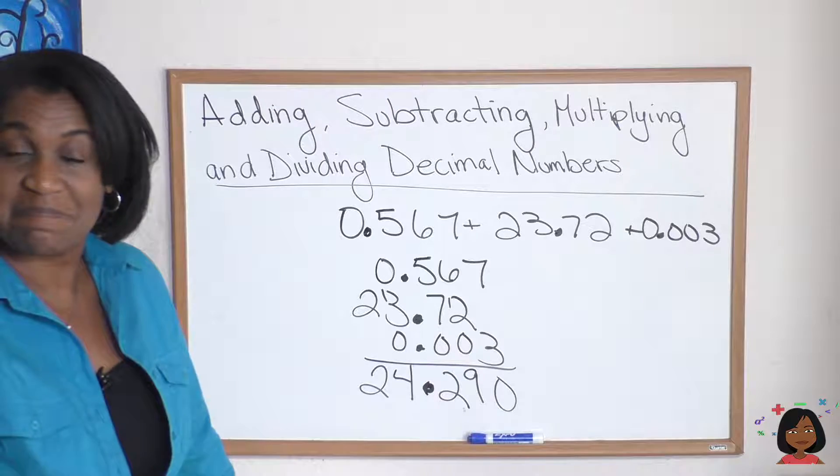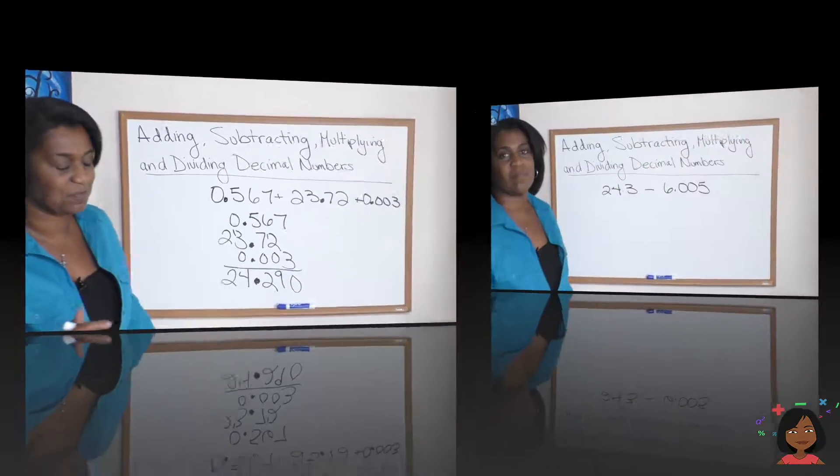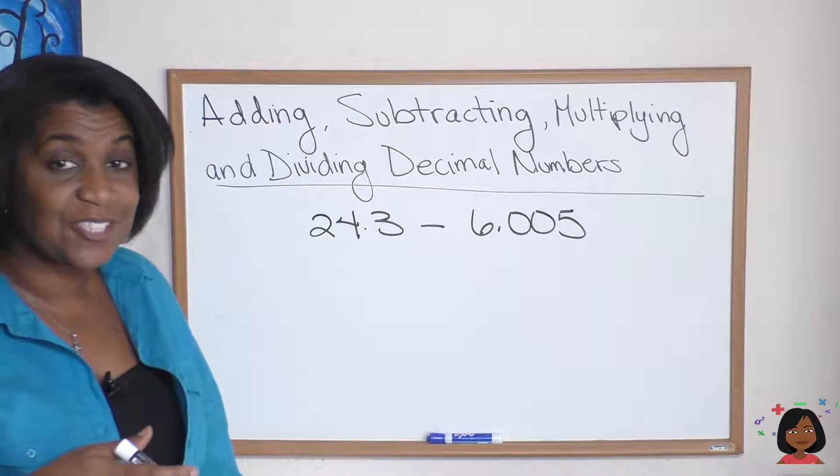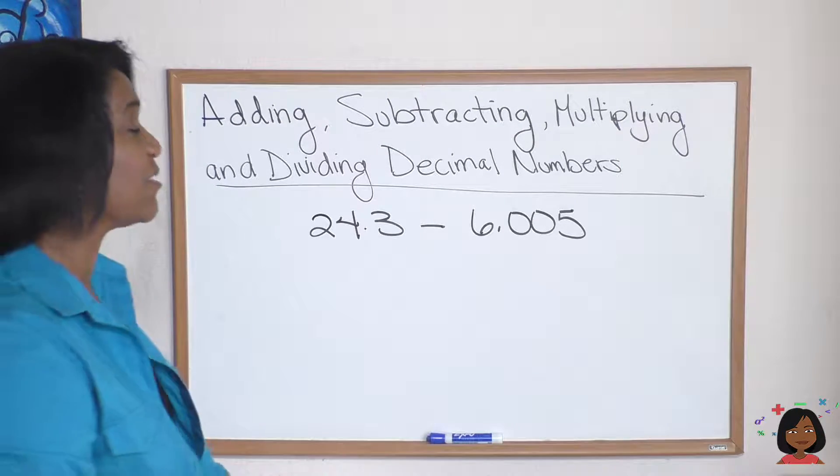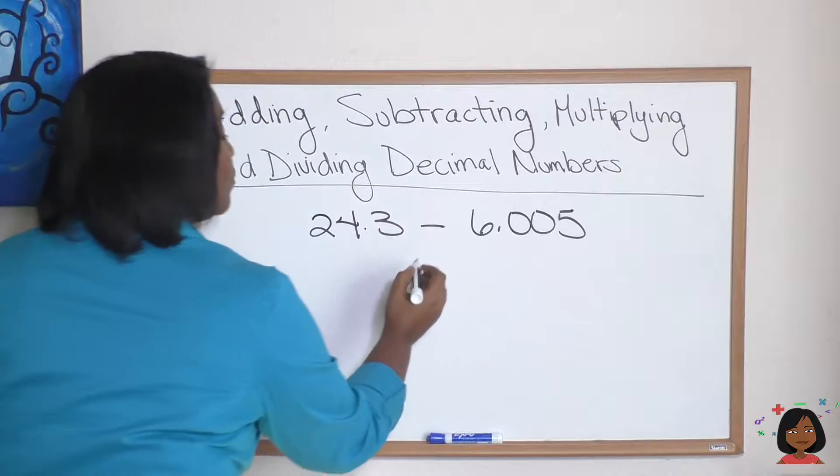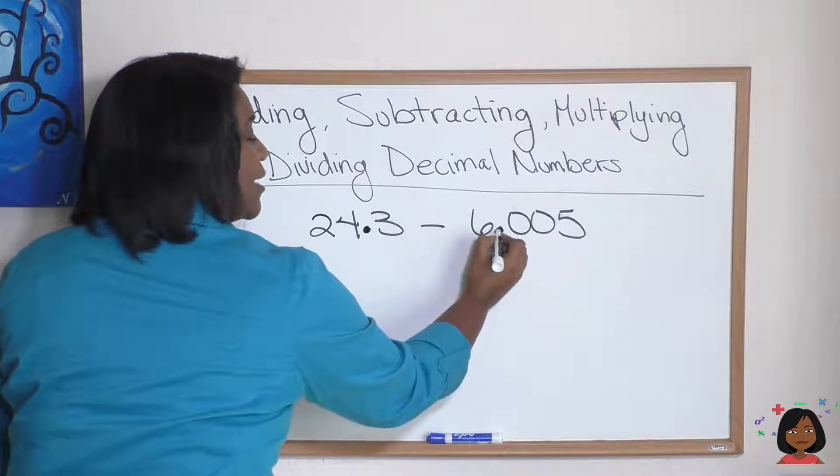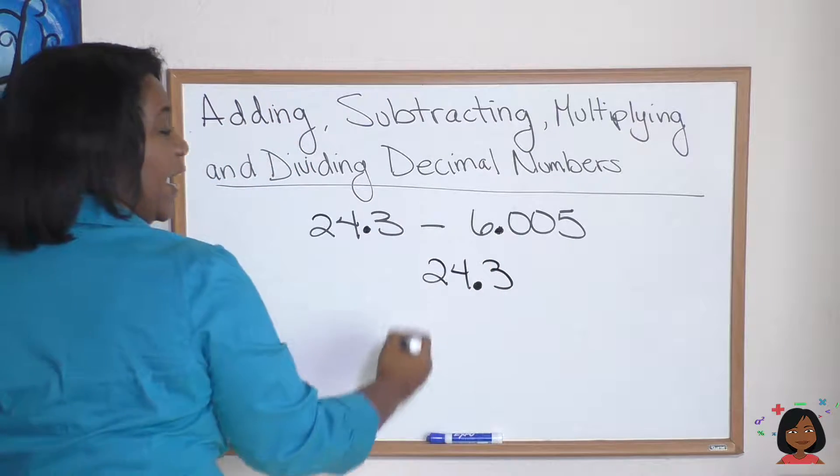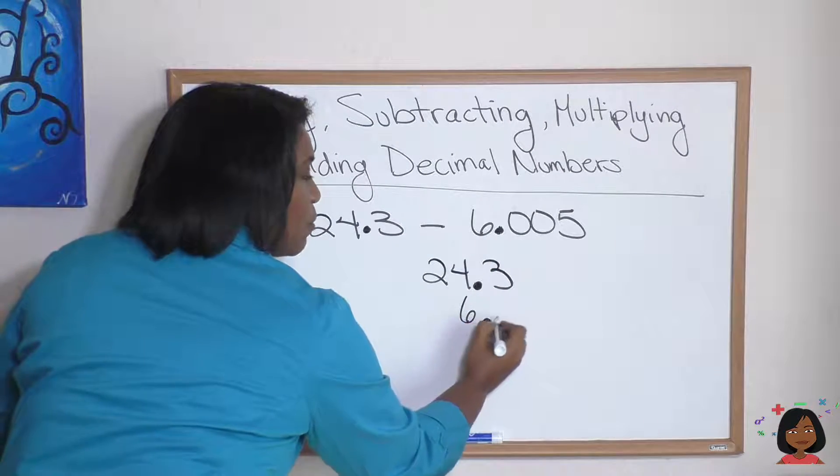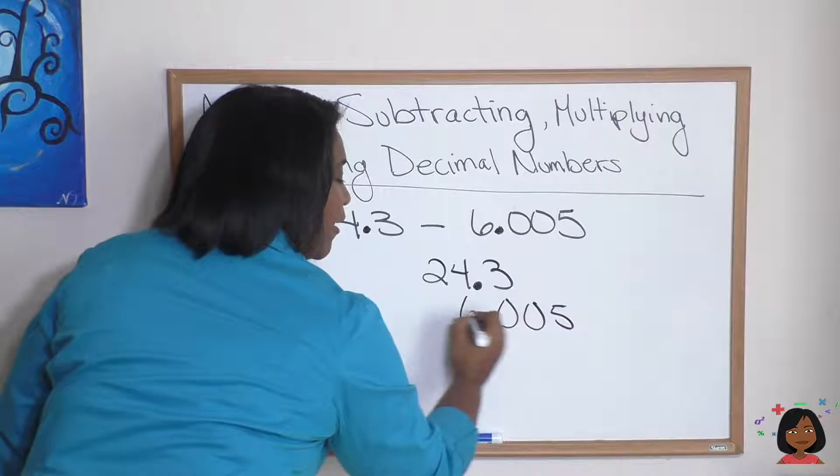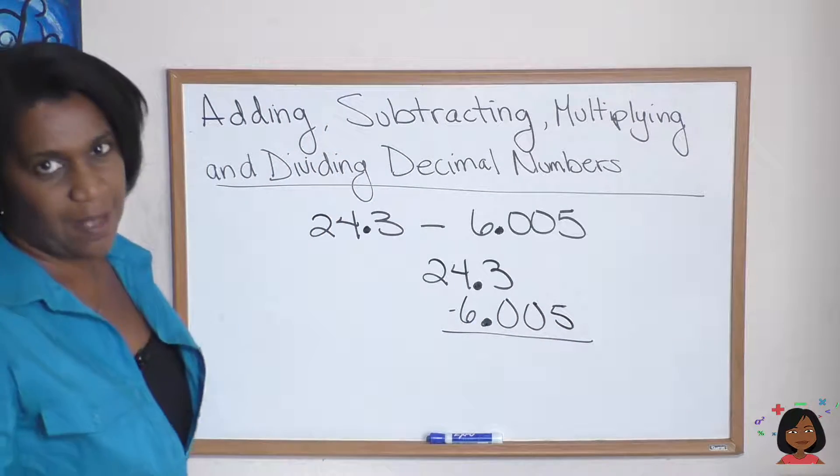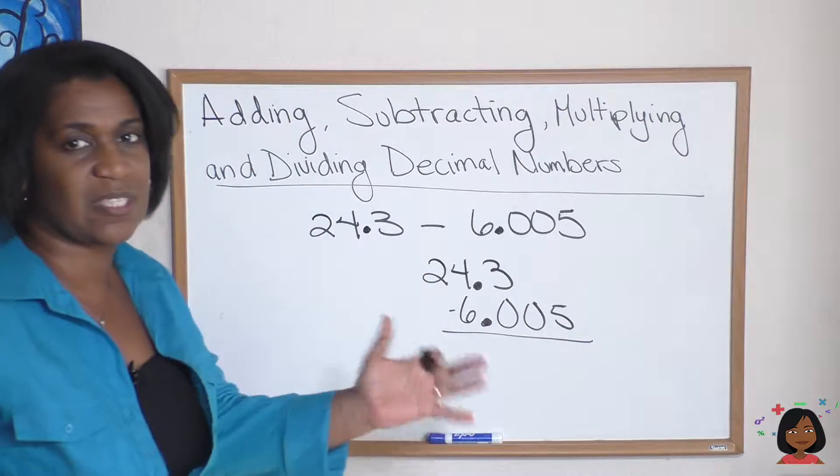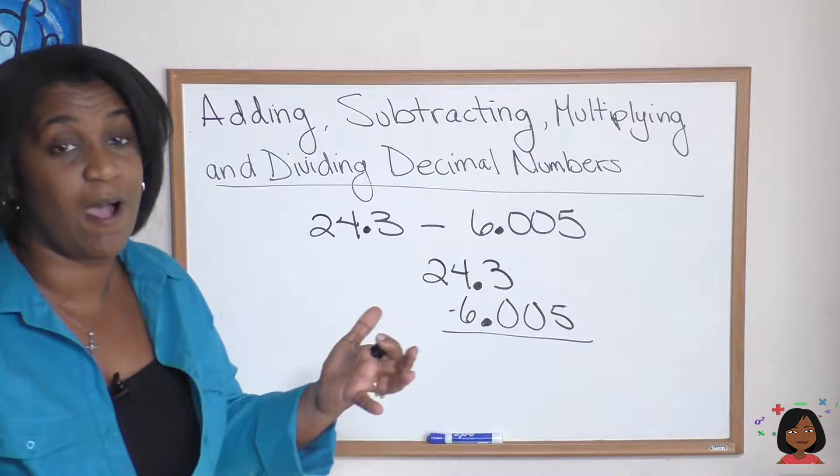Let's try subtraction. Here's a subtraction problem. Now again, just like addition, we have to line up our decimals. Let's see what happens when we do. We have 24.3 and this one's going to be 6.005. Now, do you see any possible issues here? We have to do some subtraction, but we have nothing to subtract it from, so here's where we use zeros as our placeholders.